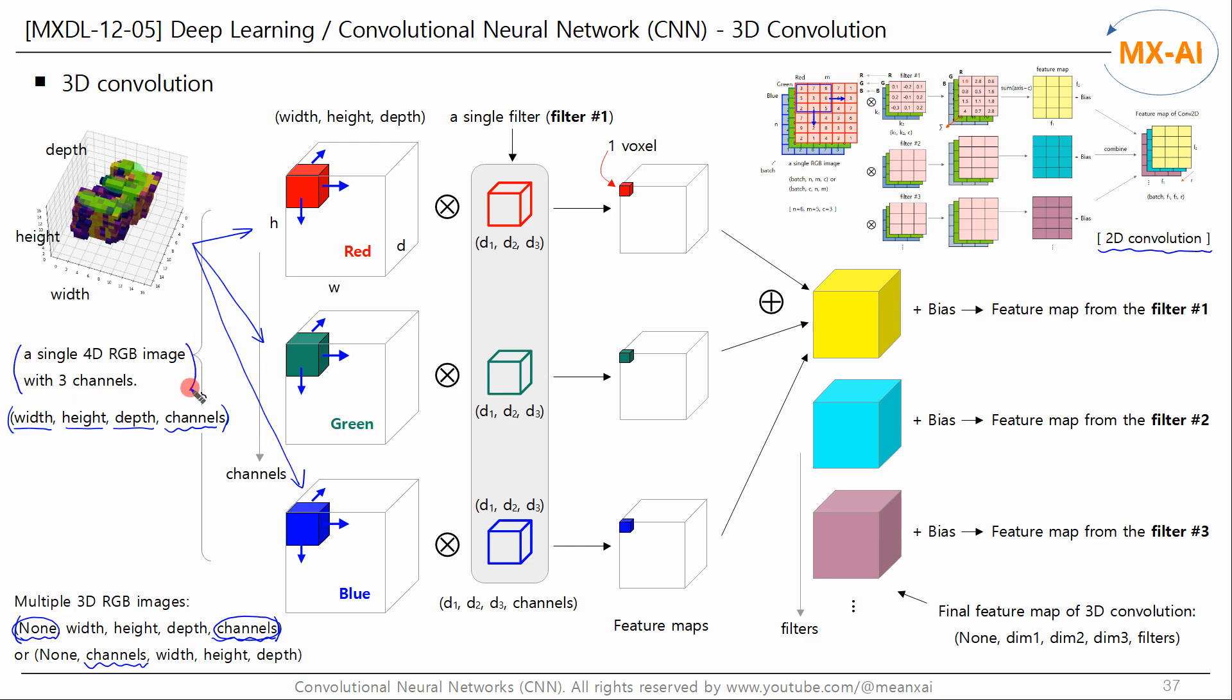This is a representation of a single 4D RGB image with three channels. This corresponds to a 2D RGB image in the 2D convolution example. And there is one filter with a 4D structure. There is one 3D filter per channel. This corresponds to the first filter in the 2D convolution example.